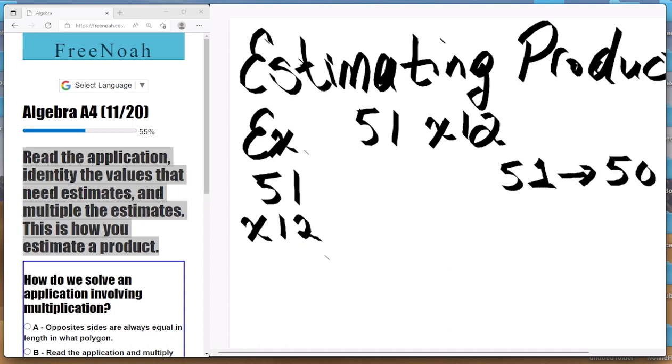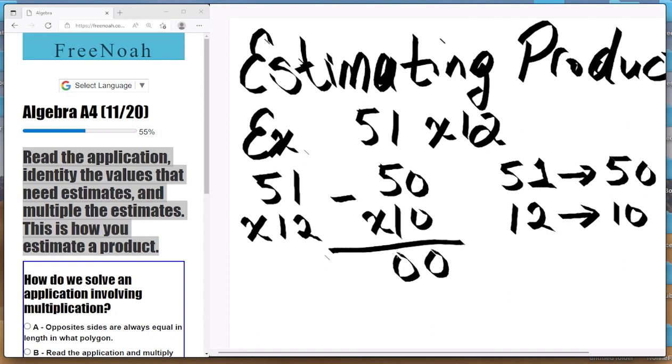And 12 we'll round down to 10. And after that it's simple, all we have to do is multiply our estimates. 50 times 10. Here we go: zero times zero is zero, zero times five is zero, zero times one is zero, and five times one is five.